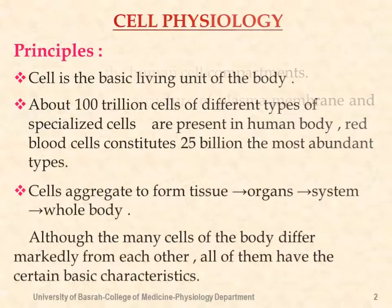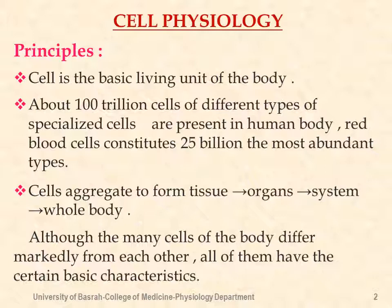Principles of cell physiology: the cell is the basic living unit of the body. About 100 trillion cells of different specialized types are present in the human body. Red blood cells constitute 25 billion, the most abundant type. Cells aggregate to form tissues, tissues form organs, then systems situated in the body.